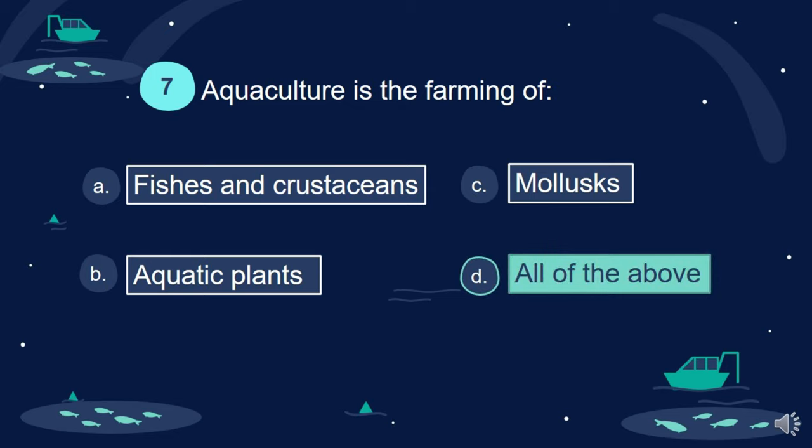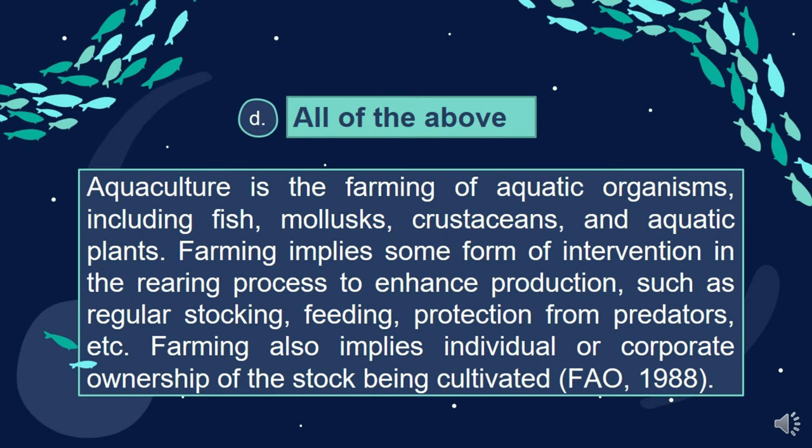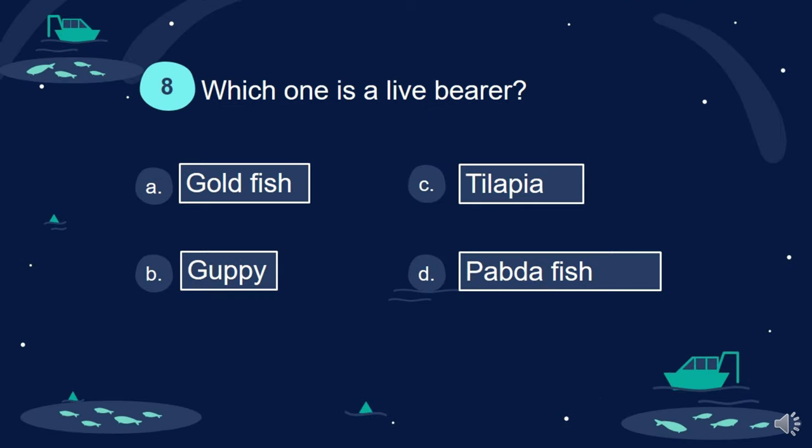Answer: D. All of the above. Aquaculture is the farming of aquatic organisms, including fish, molluscs, crustaceans, and aquatic plants. Farming implies some form of intervention in the rearing process to enhance production, such as regular stocking, feeding, protection from predators, etc. Farming also implies individual or corporate ownership of the stock being cultivated (FAO, 1988).